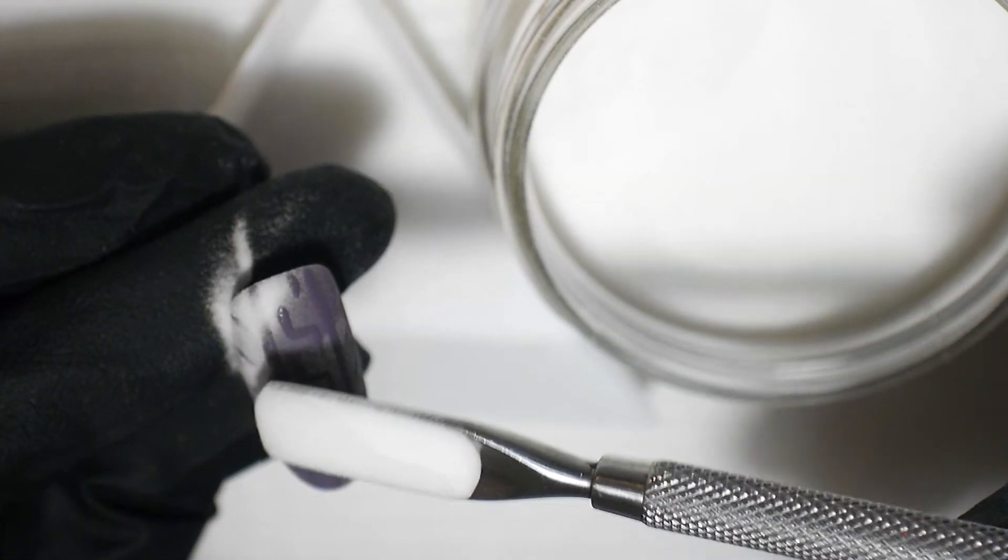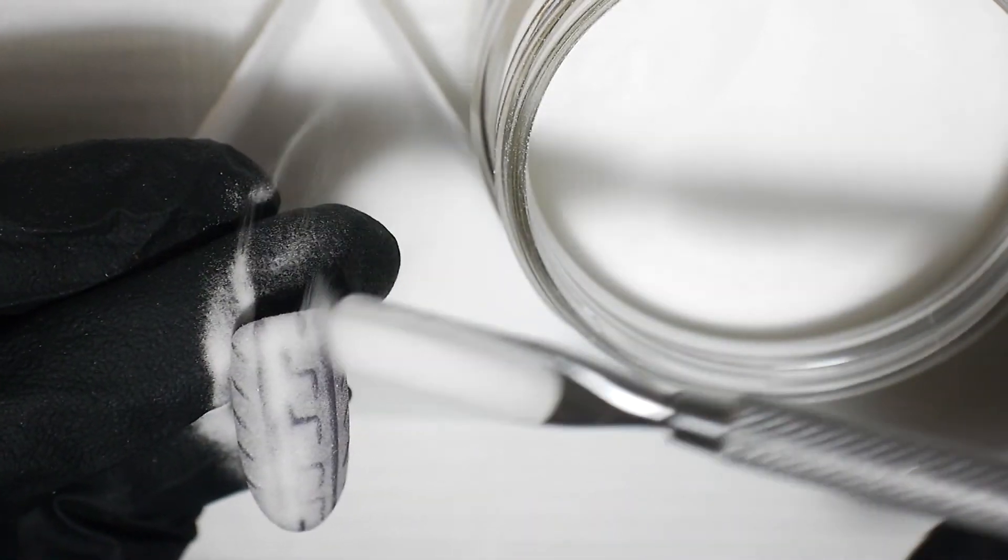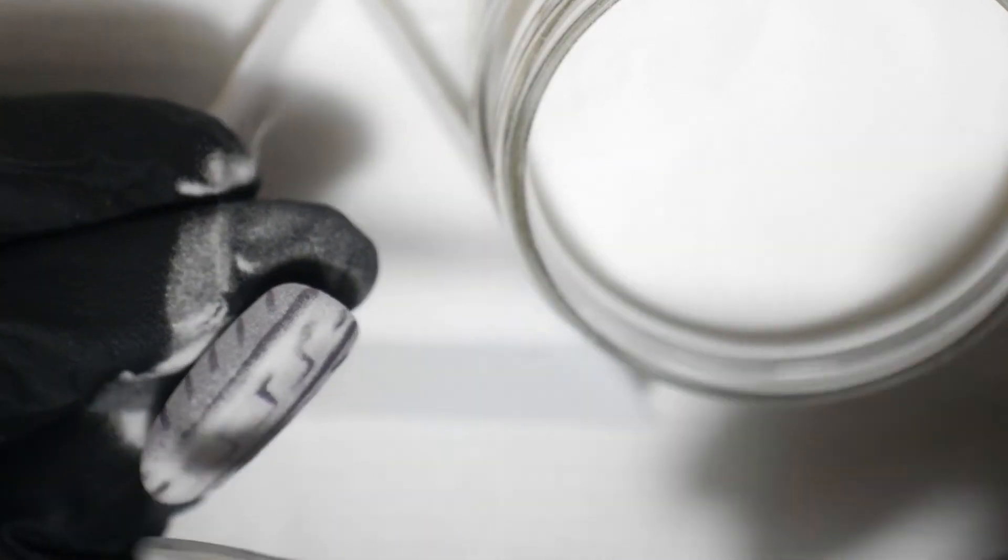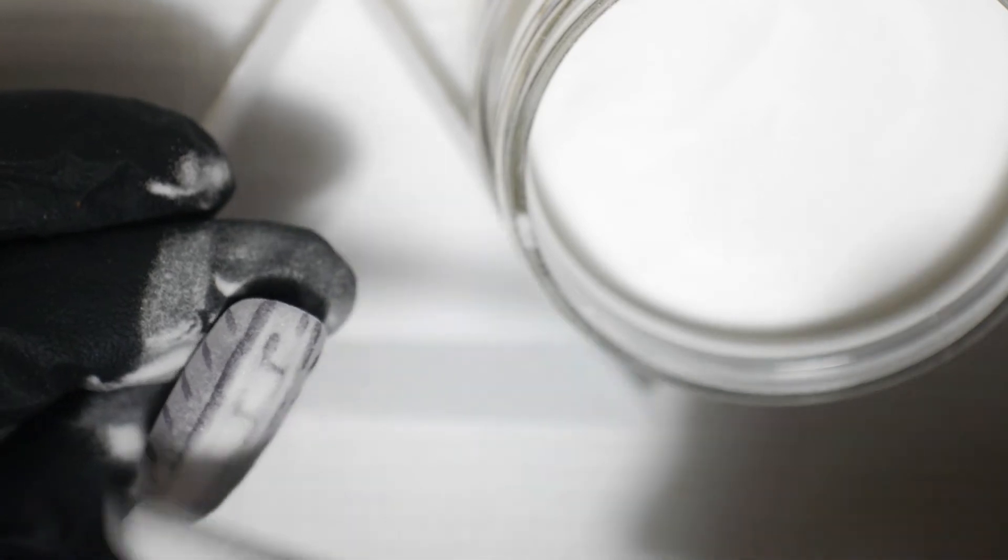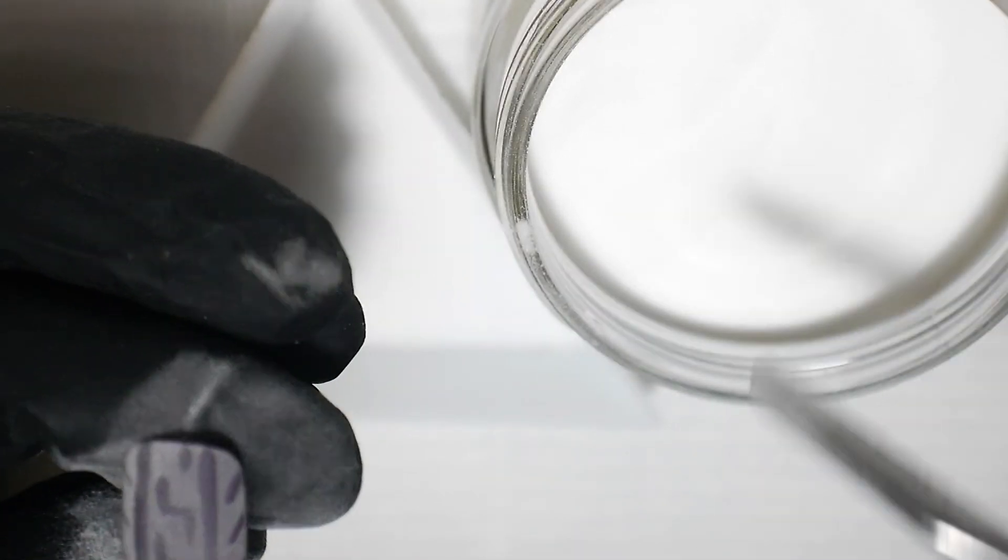Onto your wet, finished design, you're going to sprinkle over clear acrylic powder. Gently tap off any excess and pop in the lamp to cure. Now when I'm doing any embossed nail art,